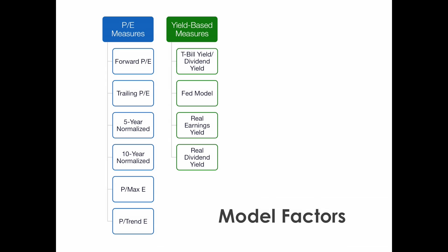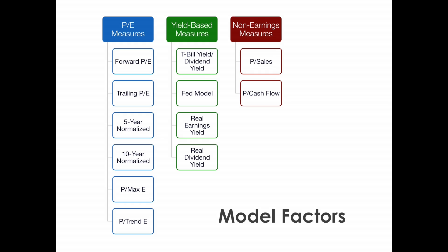The second category is called yield-based measures, where we look at the valuation of the S&P 500 in relation to other asset classes, such as government bonds and high yield bonds. The next category is non-earnings measures — the idea is similar to a price-to-earnings ratio, except we use an alternative measure of company performance such as sales and cash flow, which is not as easy for managers to manipulate through accounting, making it a truer measure of performance.